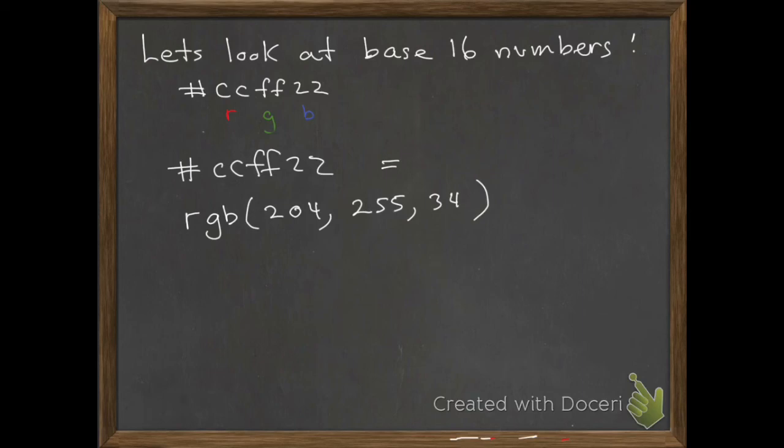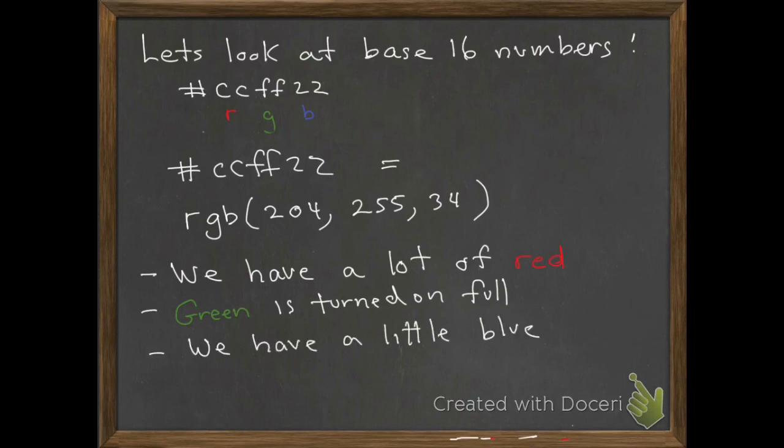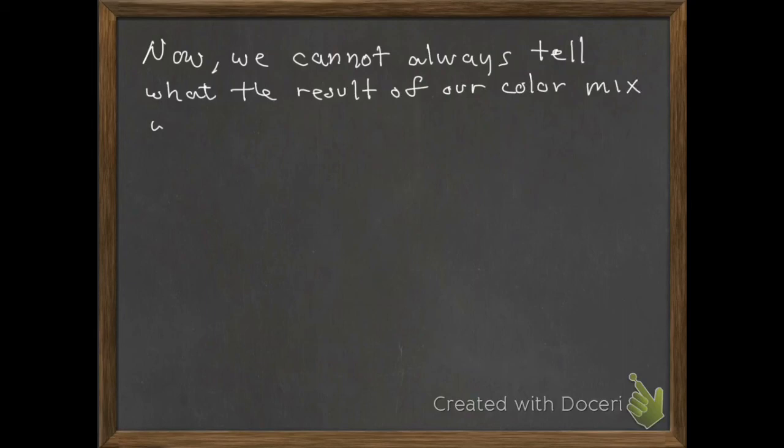Now we see that red is turned on at a pretty high intensity. Green is turned on at full intensity, and blue, we just have a little bit of that. So we end up with a lime green. Now, we cannot always know what the color mix is going to give us, but understanding how it works can give us an idea. Let's look at a few examples.